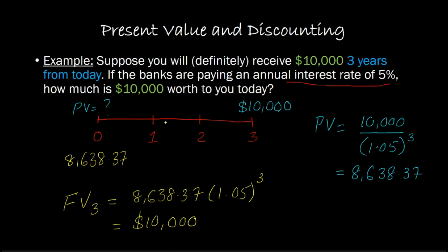Basically, the reason why this ten thousand dollars is only worth eight thousand six hundred and thirty-eight point three seven to us today is that if we had this amount today, we ourselves could have grown it to ten thousand dollars three years into the future by investing at a rate of five percent.